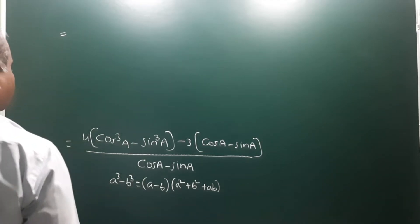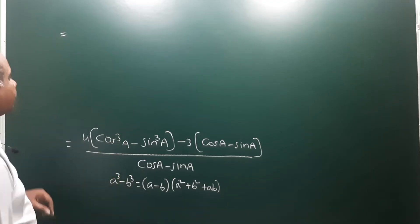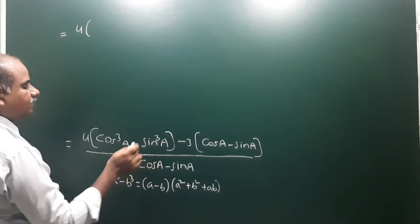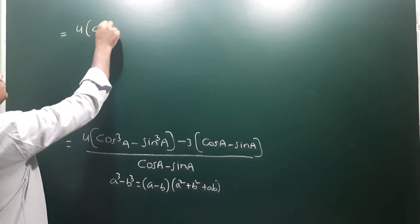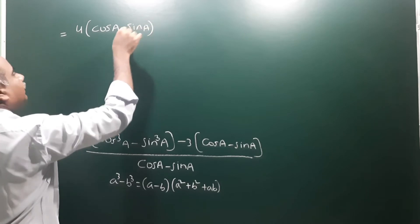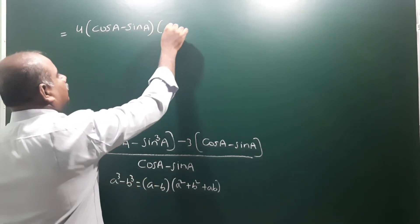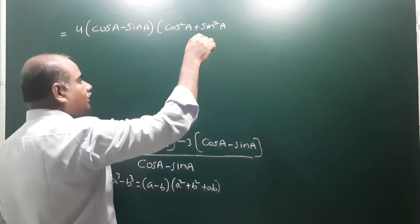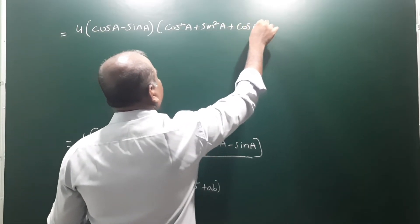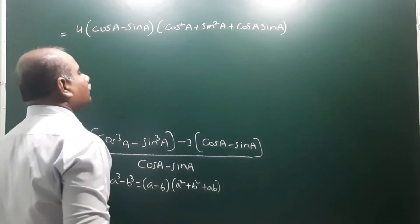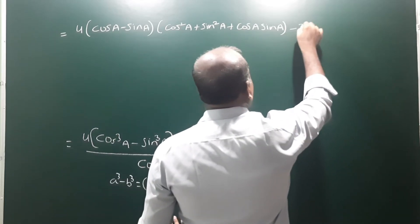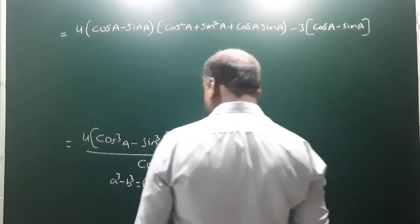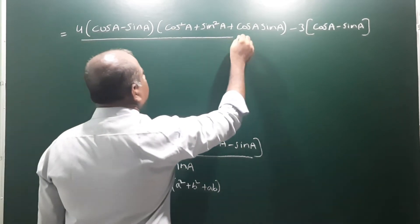Apply the a³ - b³ formula to the first bracket. Here a means cosa and b means sina. So it becomes 4(cosa - sina)(cos²a + sin²a + cosa·sina), and the next term is -3(cosa - sina). The denominator is (cosa - sina).